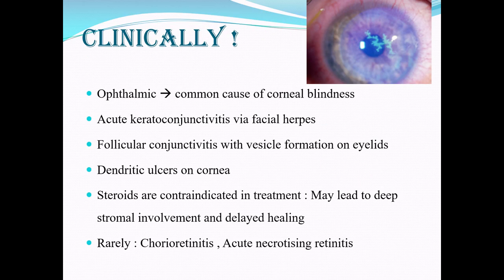One of the most important effects of this virus is corneal blindness. There can be acute keratoconjunctivitis, follicular conjunctivitis with vesicles of the eyelids, and dendritic ulcers of the cornea. In any viral infection, steroids are generally contraindicated — same here — because they may lead to deeper involvement and worsen the infection. Very rarely, there can be corneal retinitis or acute necrotizing retinitis.